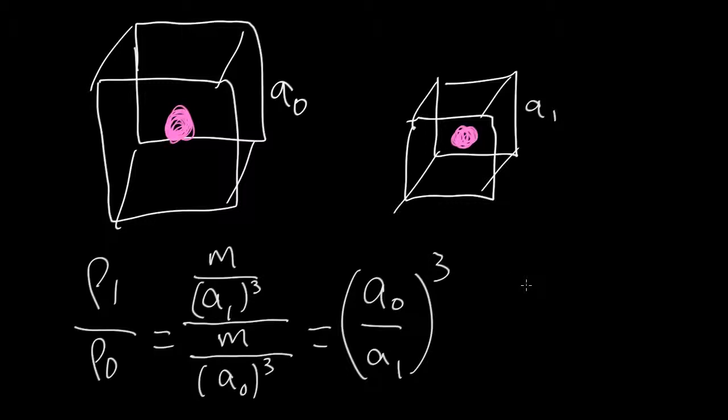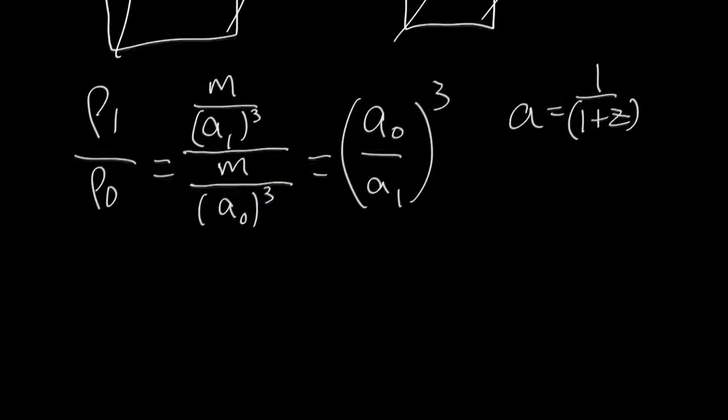Now, remembering that the scale factor is equal to 1 over 1 plus z, or I should say that how the scale factor changes goes as 1 over 1 plus z, then we can rewrite this. And we can see that if I make a substitution for 1 over 1 plus z, that this whole thing becomes (1 plus z1) over (1 plus z0) cubed.